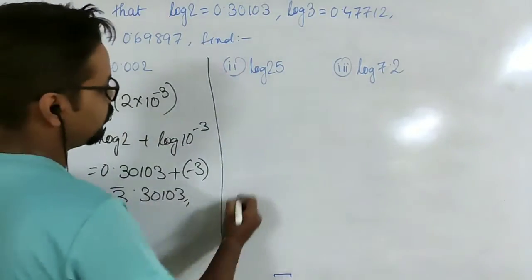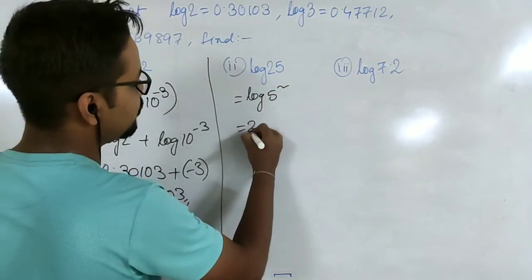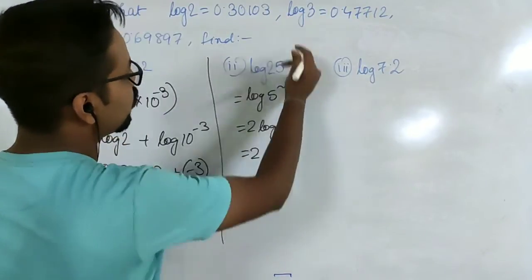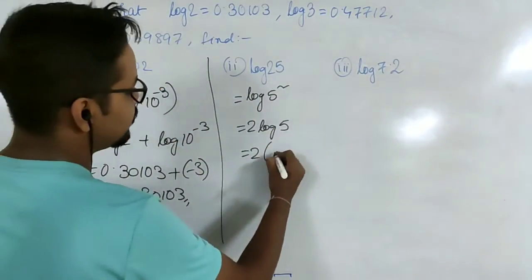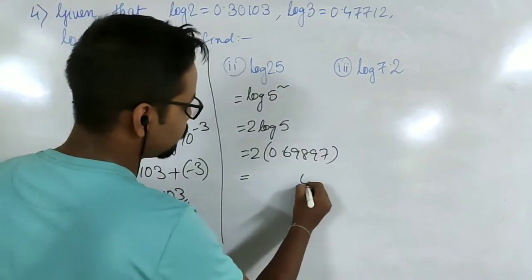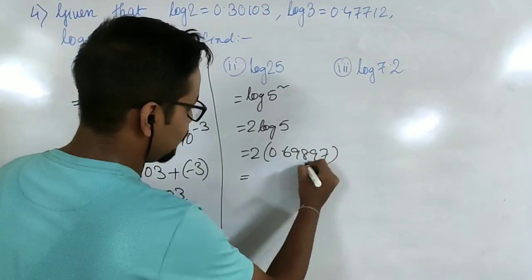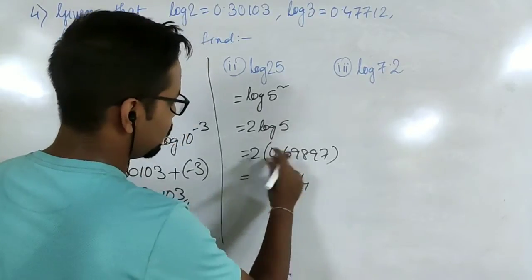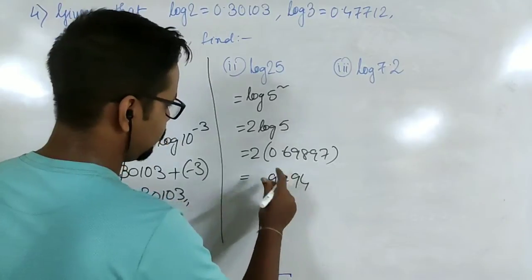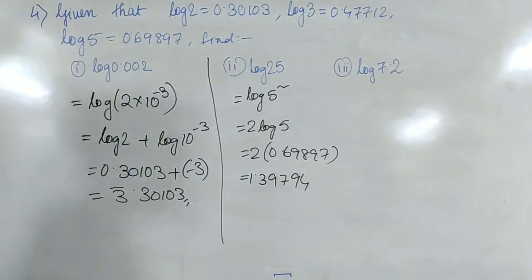For log of 25, we recognize 25 equals 5 squared. So log 25 equals 2 times log 5, which is 2 times 0.69897, giving 1.39794.